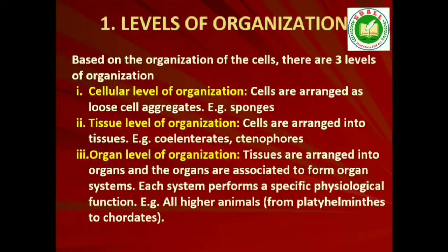1. Levels of Organization: Though all members of Animalia are multicellular, all of them do not exhibit the same pattern of organization of cells. For example, in sponges, the cells are arranged as loose cell aggregates — they exhibit cellular level of organization. Some division of labor occurs among the cells. In coelenterates, the arrangement of cells is more complex; cells performing the same function are arranged into tissues, hence called tissue level of organization.